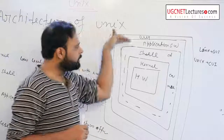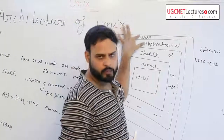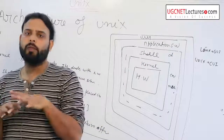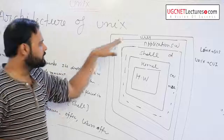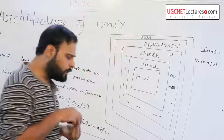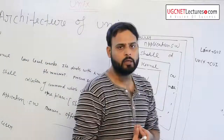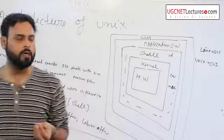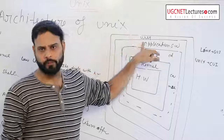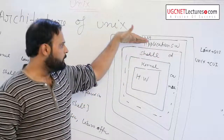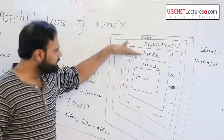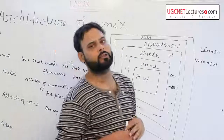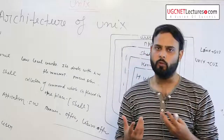Above the application software there is the user — we are all users. The user interacts with application software or the command prompt, application software or command prompt deals with the kernel, and the kernel deals with the hardware. This is the general structure and general architecture of Unix.